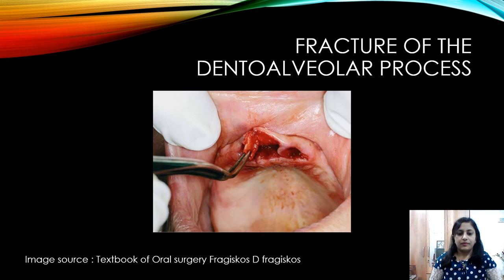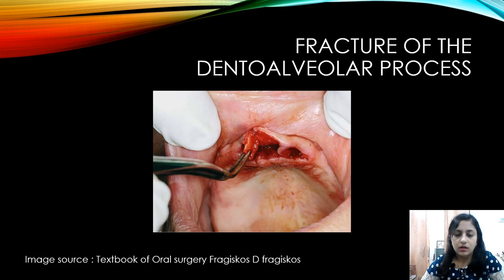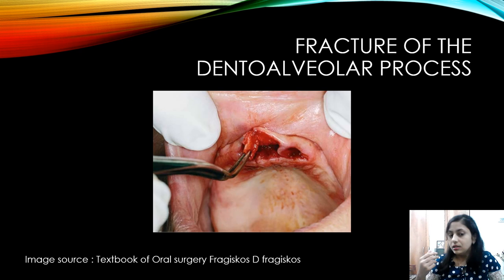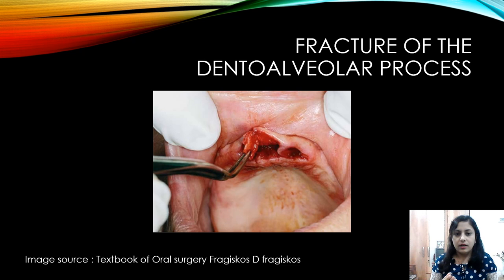We should always use controlled force while extracting a tooth. Using abrupt force and sudden movements can result in fracture of the dentoalveolar process. Especially in the case of mandibular third molar, avoid fracturing the lingual cortical plate as it can result in lingual nerve injury. If fracture does happen, check if the fractured segment is loose — if it is small and loose, you can remove it, smoothen the remaining bone, and suture the wound. If the fracture segment is still attached to the mucoperiosteum, stabilize it and suture the wound after irrigating the flap.